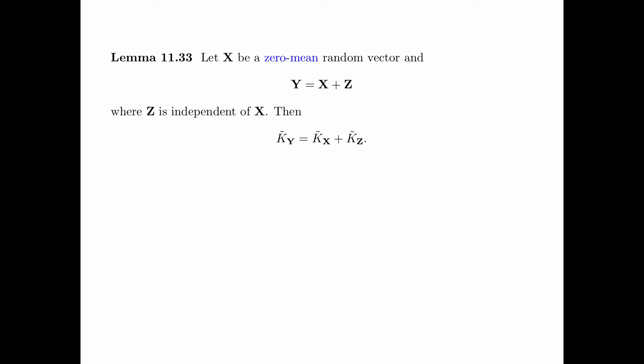We need to prove a few lemmas before proving Theorem 11.32. Lemma 11.33 says the following: let X be a zero mean random vector and Y equals X plus Z, where Z is independent of X. Then the correlation matrix of Y is equal to the correlation matrix of X plus the correlation matrix of Z. As a remark, the scalar case of this lemma has been proved in the proof of Theorem 11.21. The proof of this lemma is straightforward, and so the details are omitted here.